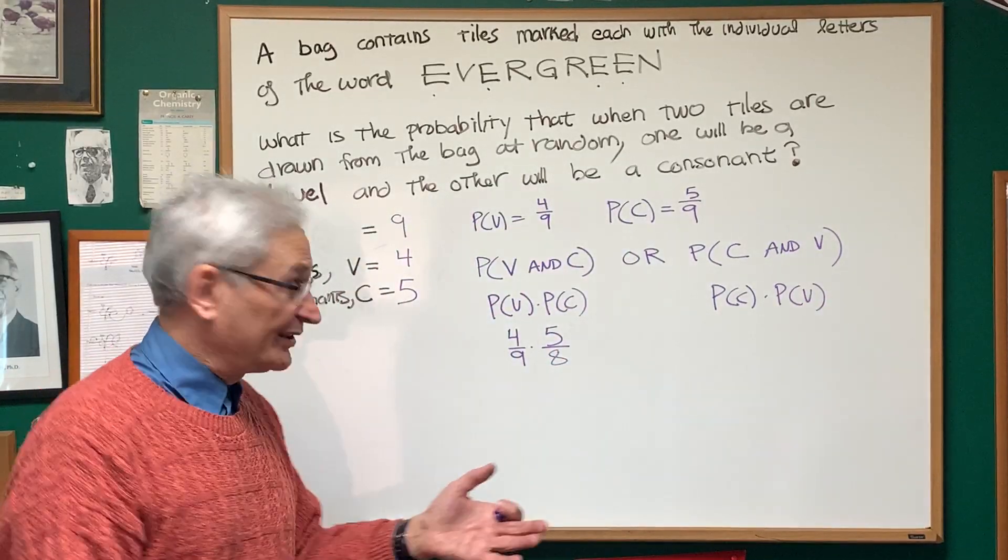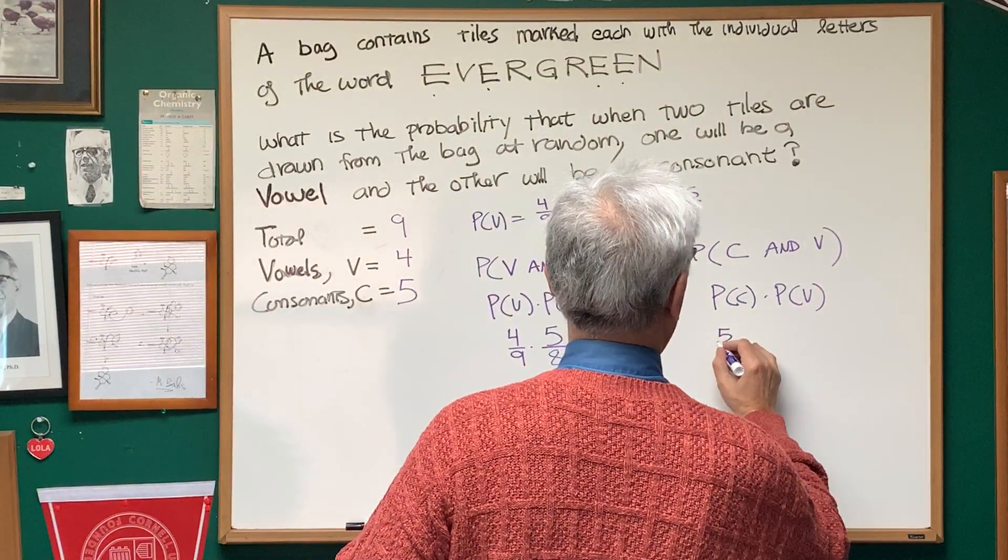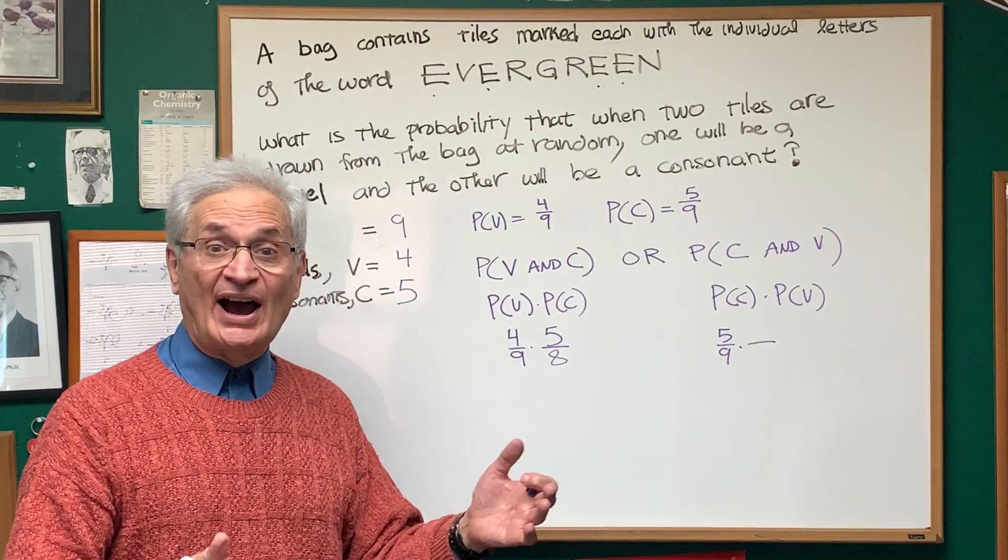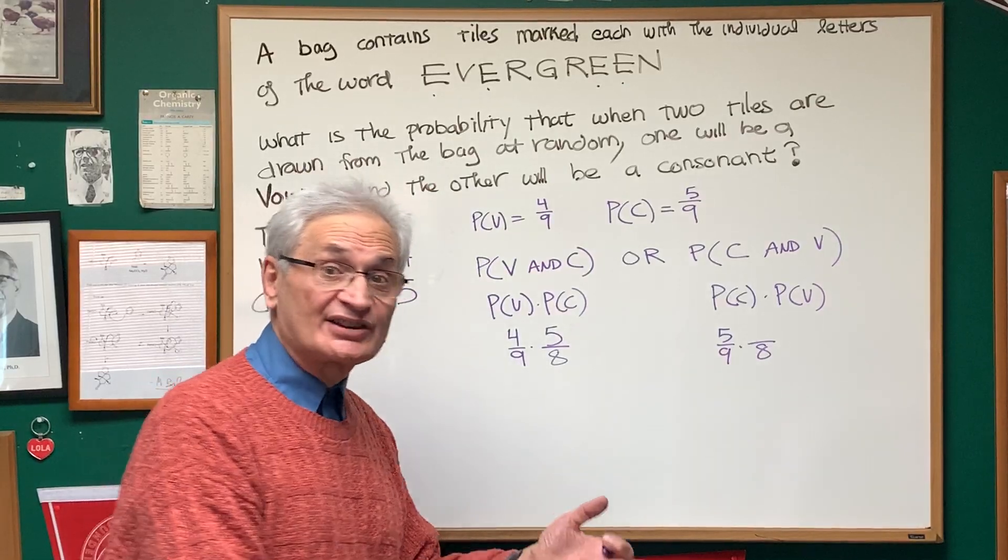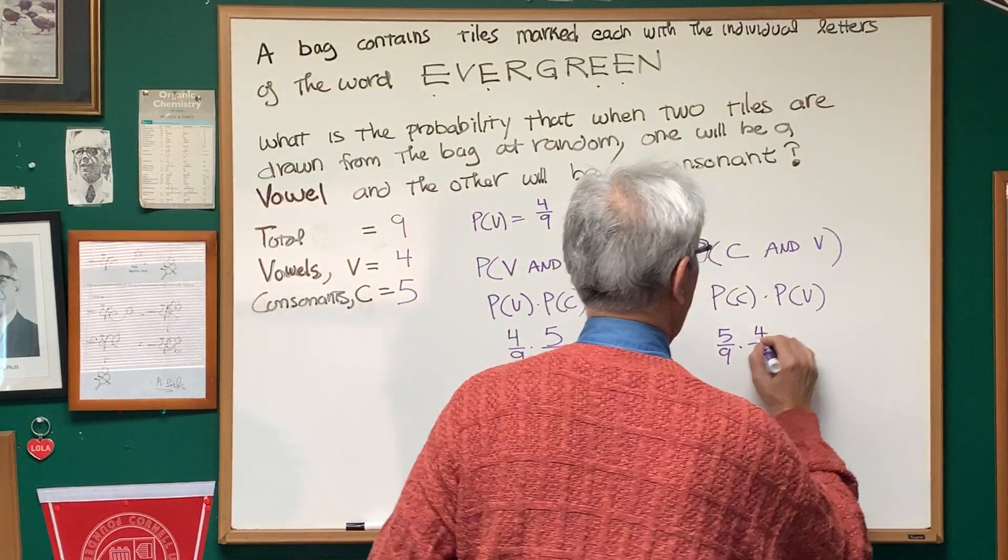Well, same thing. The probability of choosing a consonant is going to be five ninths. And then the probability of choosing a vowel is going to be out of the eight remaining tiles in the bag. So that's going to only be four out of eight.